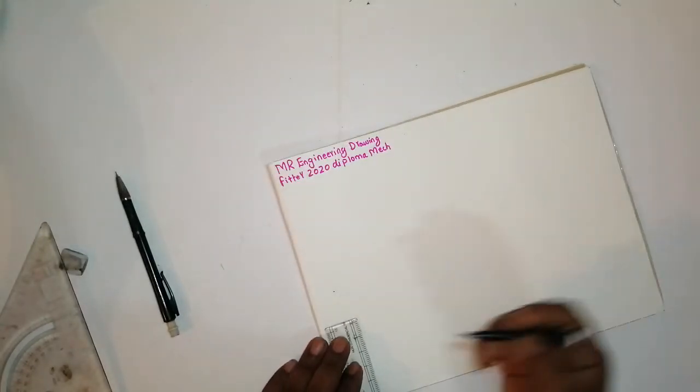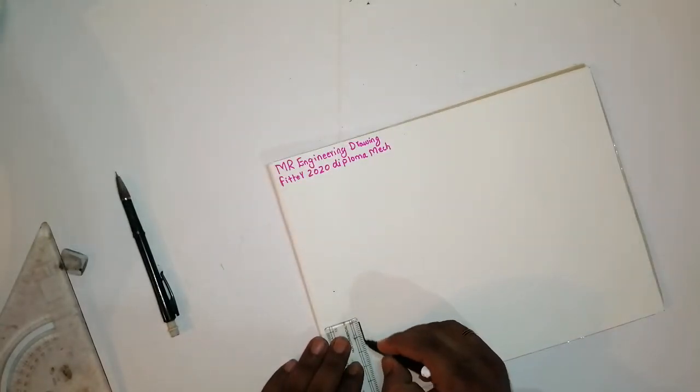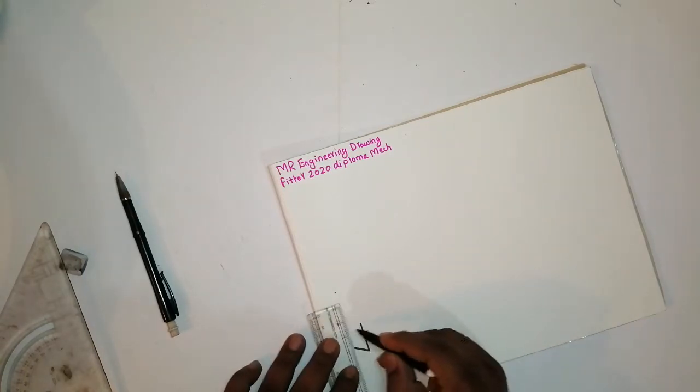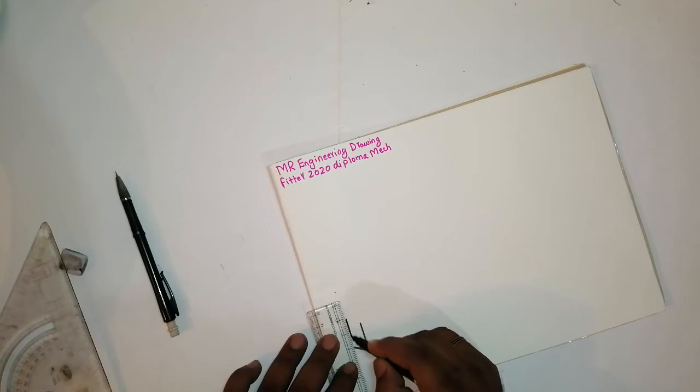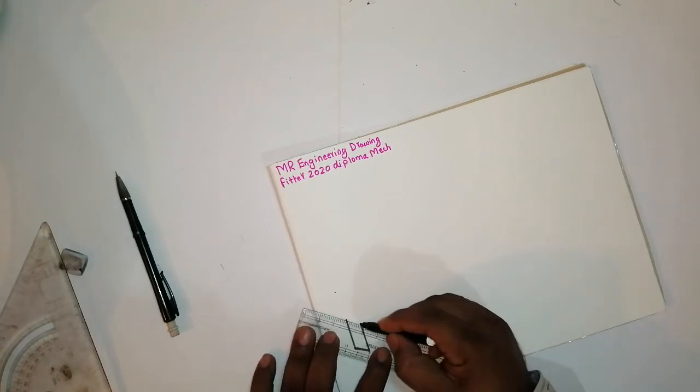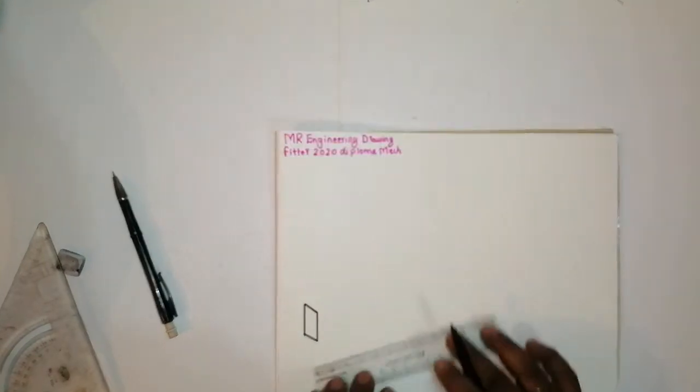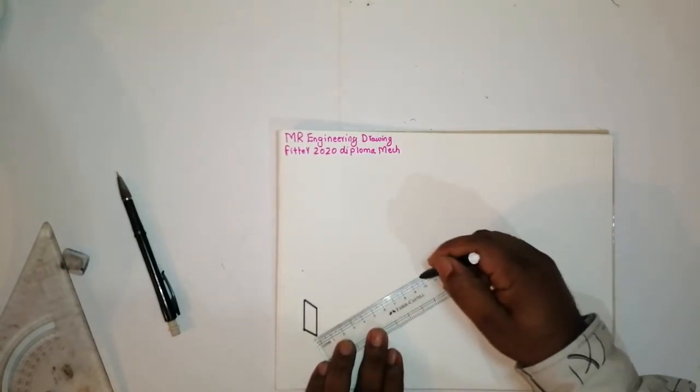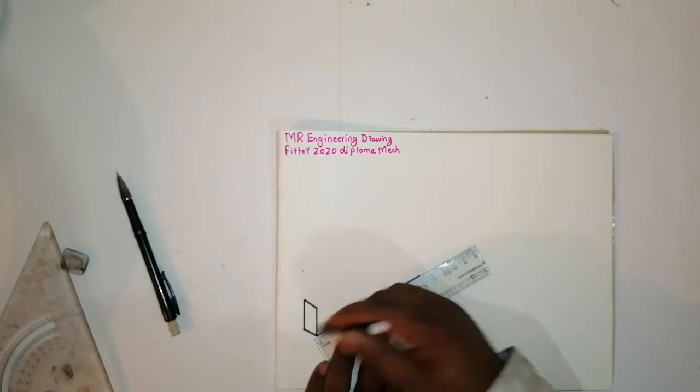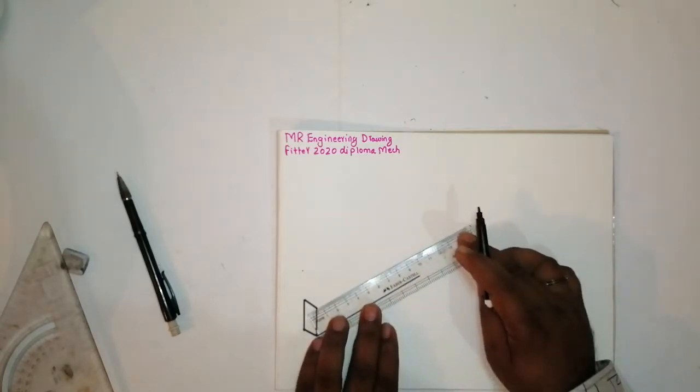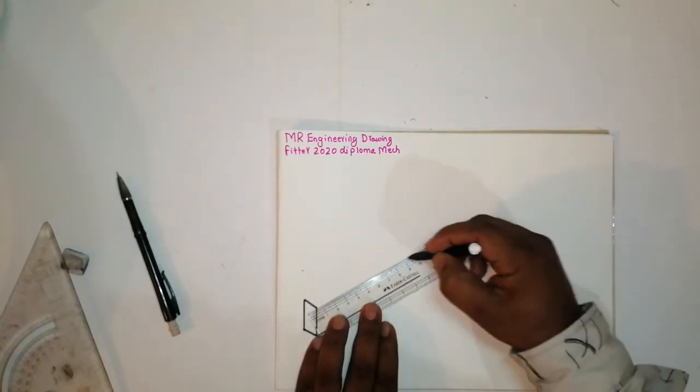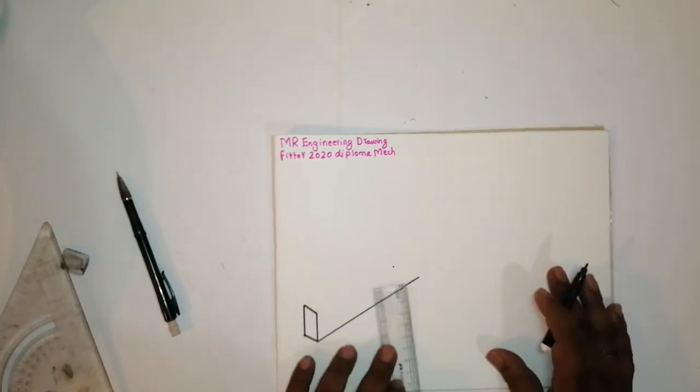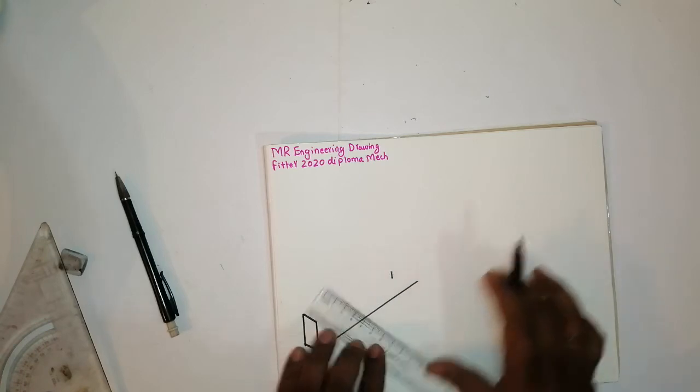See, I have taken like this. One more box, like a rectangular box. Okay, then I have taken 100 mm and then again I left 80 here for the groove purpose.